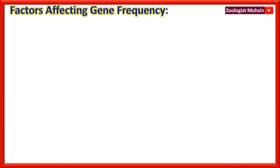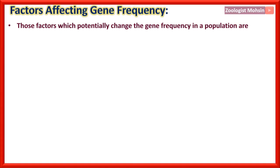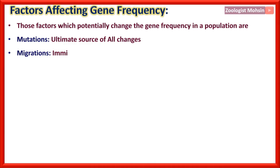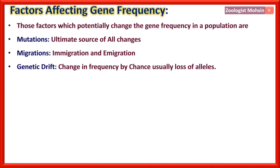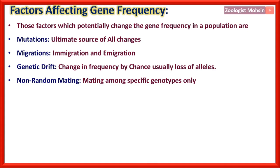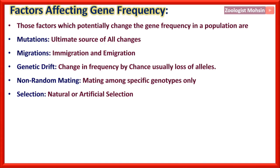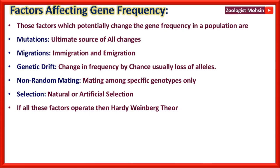Factors affecting gene frequency: Mutations are the ultimate source of all changes. Migrations — in-migration and out-migration — alter frequencies. Genetic drift is change in frequency by chance, usually resulting in loss of alleles. Non-random mating among specific genotypes disturbs overall frequency. Natural or artificial selection both disturb Hardy-Weinberg equilibrium. If all these factors operate, the Hardy-Weinberg theorem fails to predict accurate gene frequencies.